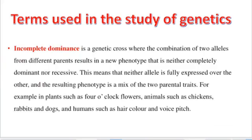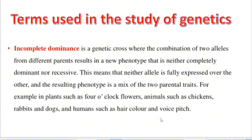Apart from complete dominance, we also have incomplete dominance. Incomplete dominance is a genetic cross where the combination of two alleles from different parents results in a new phenotype that is neither completely dominant nor recessive. Neither allele is fully expressed over the other, and the resulting phenotype is a mix of the two parental traits. Examples include four o'clock flowers in plants, chickens, rabbits, and dogs in animals, and hair color and voice pitch in humans. Incomplete dominance can also be defined as the dilution of the dominant allele with respect to the recessive allele, resulting in a new heterozygous phenotype.